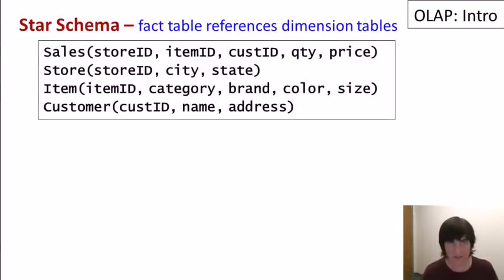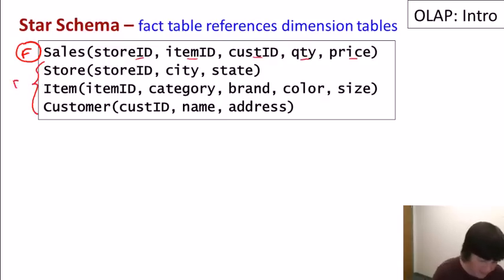So I'll draw the picture. Let's take a particular example, and let's look at the sales domain. So we'll have our facts table here, which will be the sales table. And that will log sales transactions. It'll include the store where the sale was made, the item that was sold, the customer, how many were sold, and the price that was paid. And then the other three tables are the dimension tables. So those are giving us information about the stores and the items and the customers.